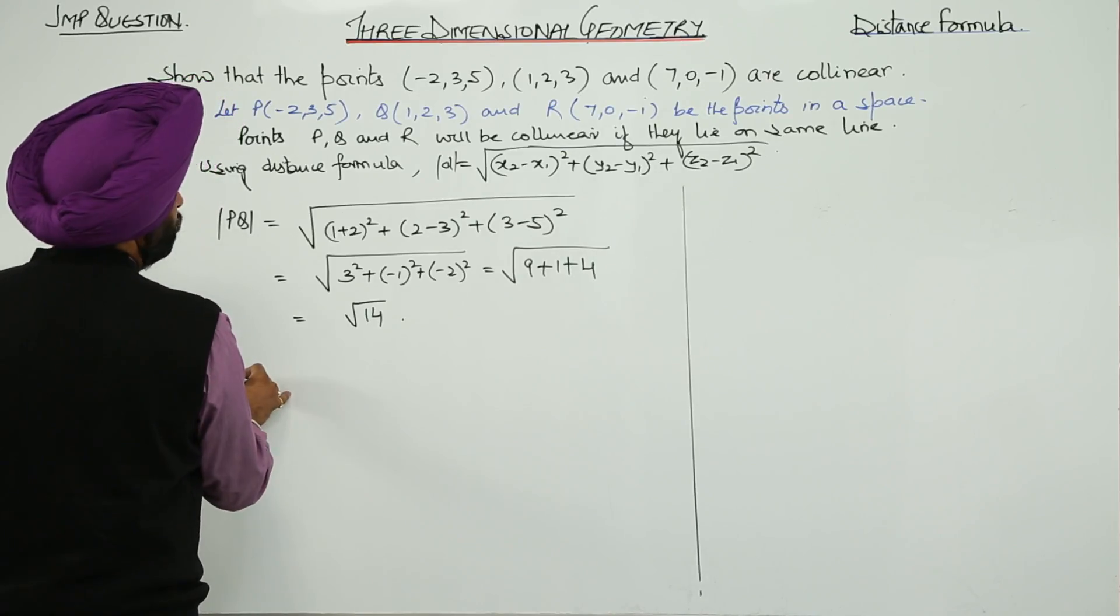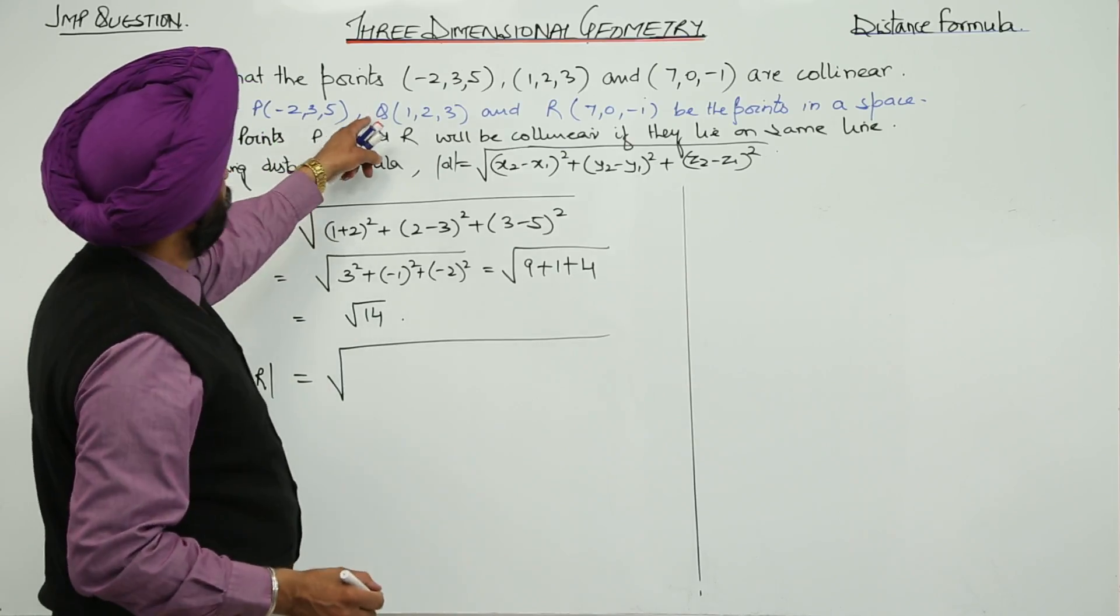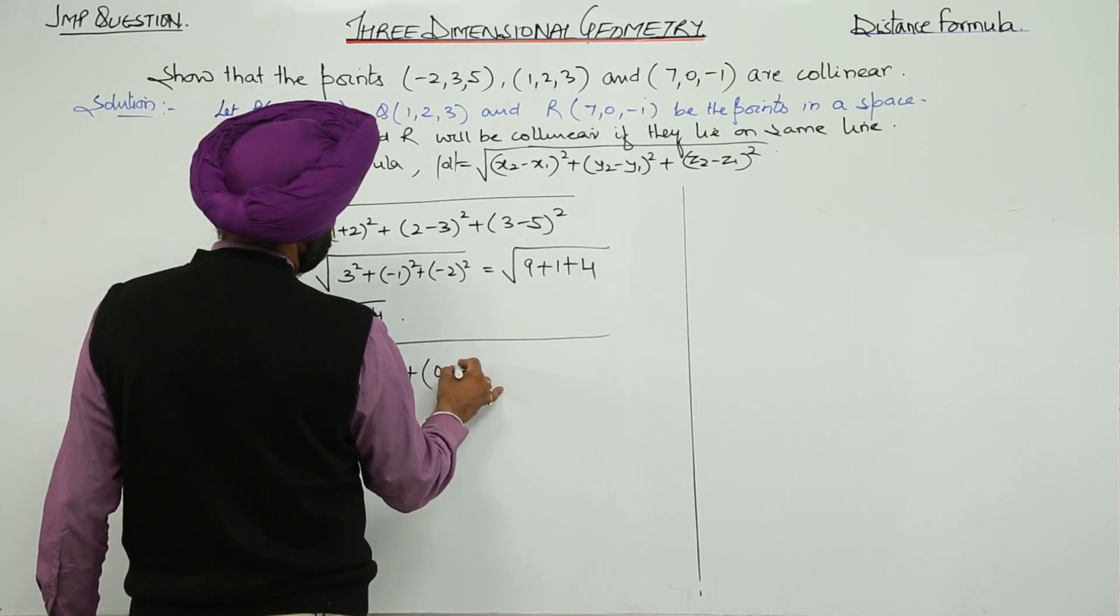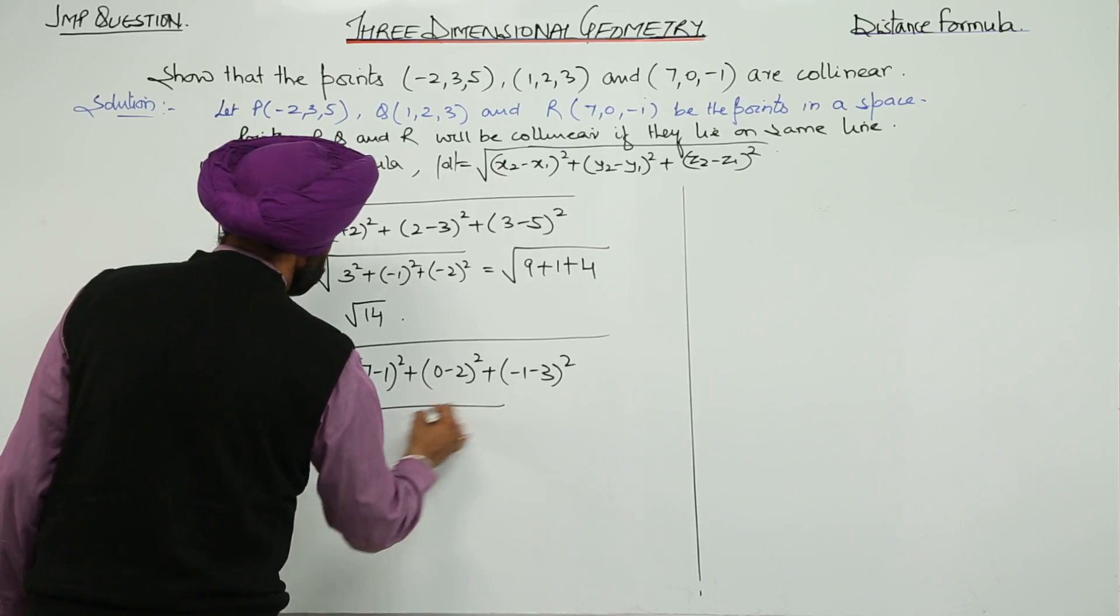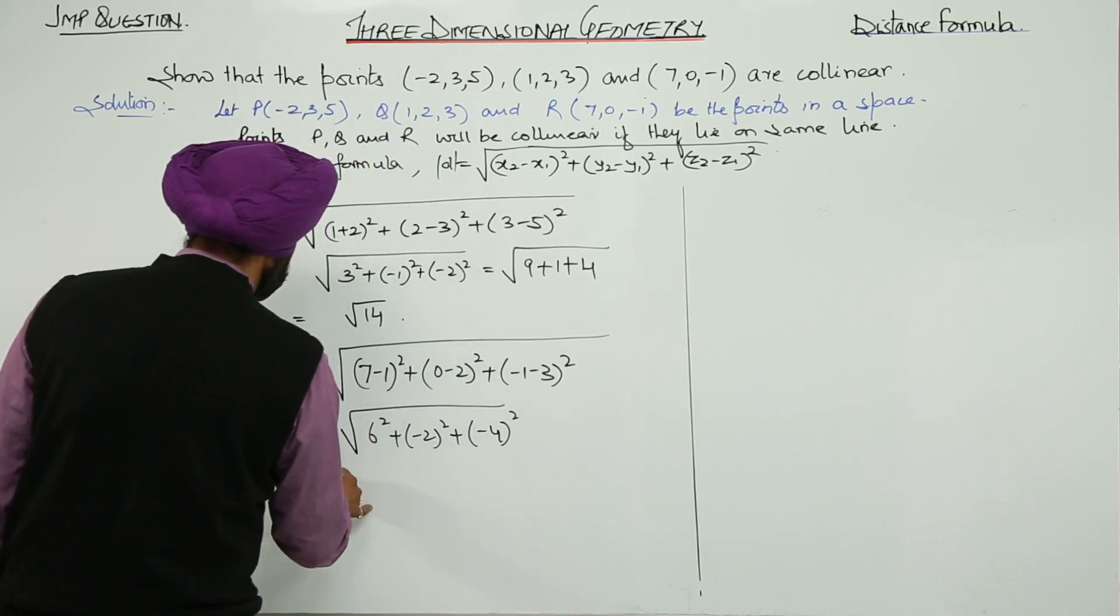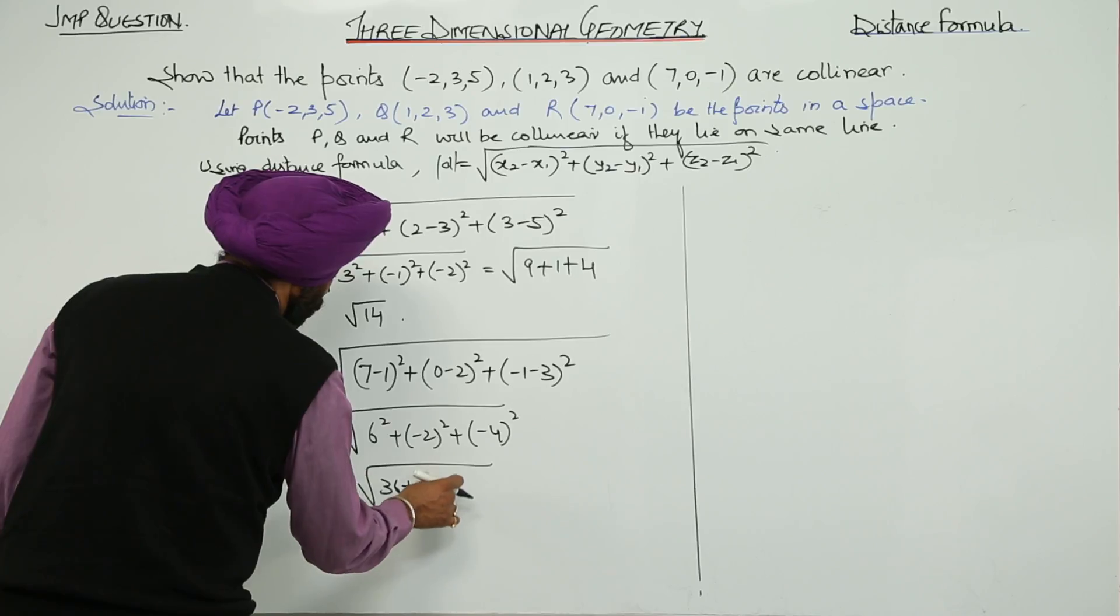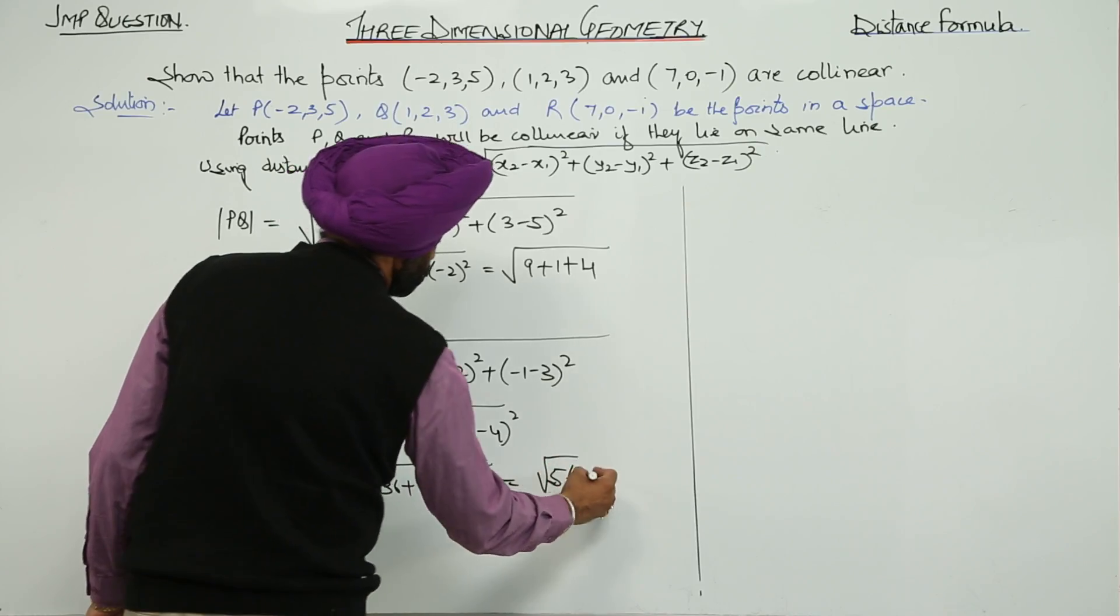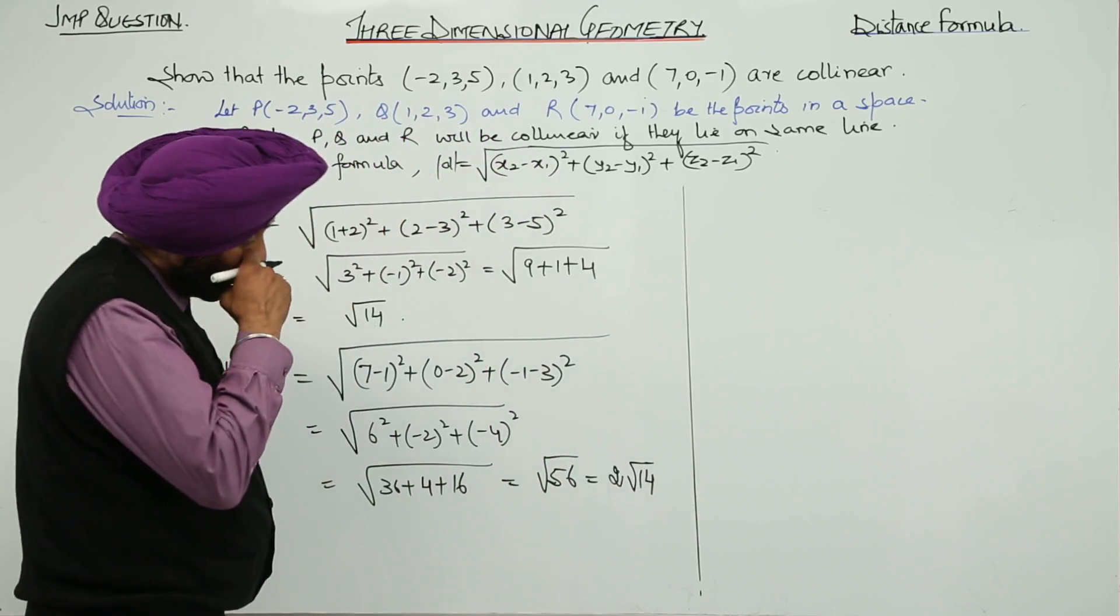After PQ, let it be QR. Q and R: (7 minus 1) whole square plus (0 minus 2) whole square plus (negative 1 minus 3) whole square. 6 square plus negative 2 square plus negative 4 square. This becomes 36 plus 4 plus 16, under root 56. This will be 2 root 14, because 14 times 4 is 56.